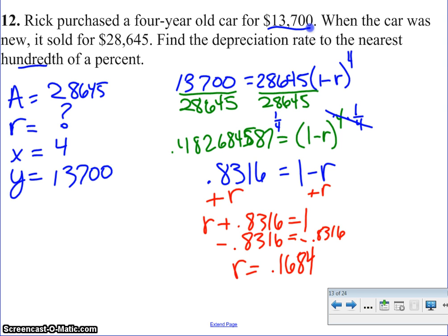But remember, it's asking as a percent. So the next thing I'm going to do is move that decimal over 2 to the right. And it's 16.84. It's set to the nearest hundredth of a percent. So I do need both the 8 and the 4. And there's my answer.